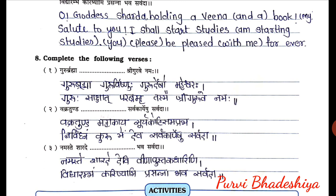Second one — Vakratund blank and Sarvakaryesu Sarvada. The complete verse is: Vakratund Mahakaya Surikoti Samaprabha, Nirvidnam Kurumedeva Sarvakaryesu Sarvada. Third one — Namaste Sarade Devi blank Bhava Sarvada. The complete verse is: Namaste Sarade Devi, Veena Pustakadhareni, Vidyarambam Karishyami, Prasanna Bhava Sarvada.